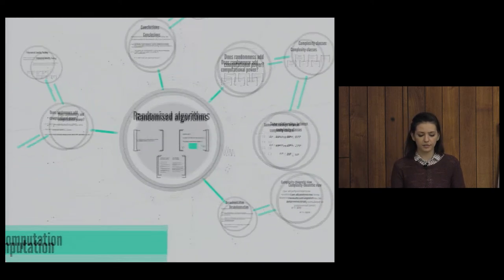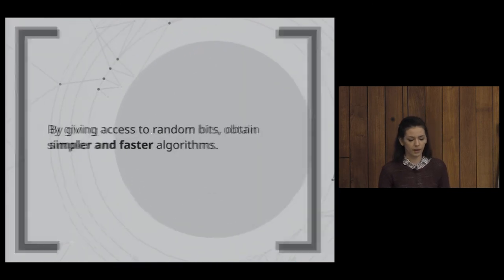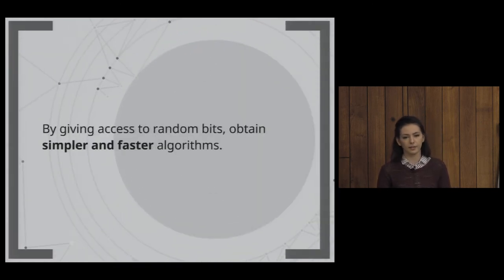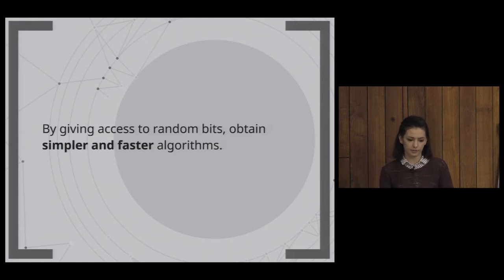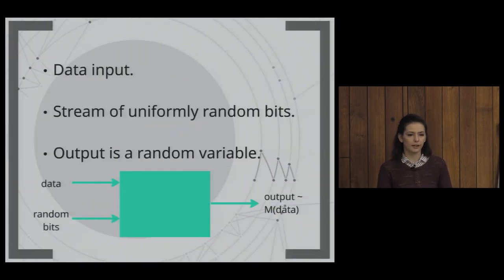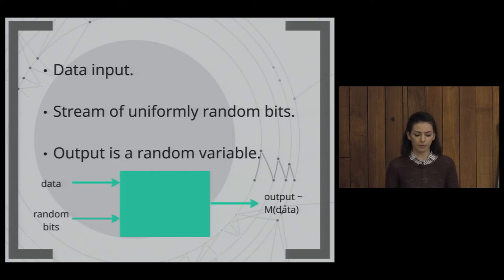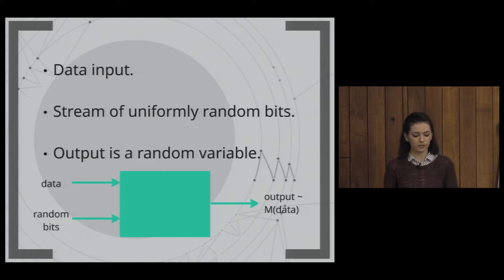Let's have a look at randomized algorithms. The idea is that by giving access to random bits, we can help the program make arbitrary decisions along its computational path, and thus obtain simpler and faster algorithms. A probabilistic algorithm is similar to a deterministic one: it has a data input, but also gets a random bit stream as input, and the output is a random variable whose probability distribution depends on those random bits.